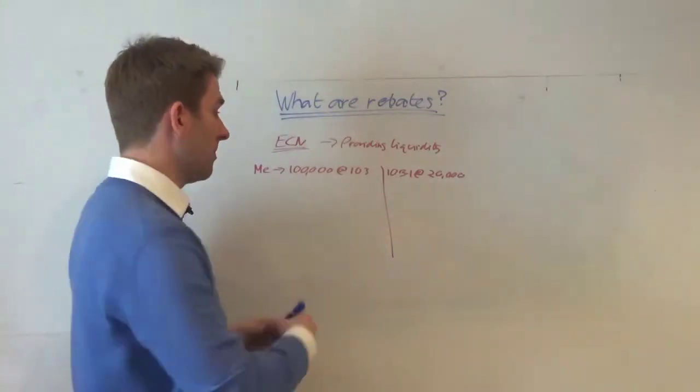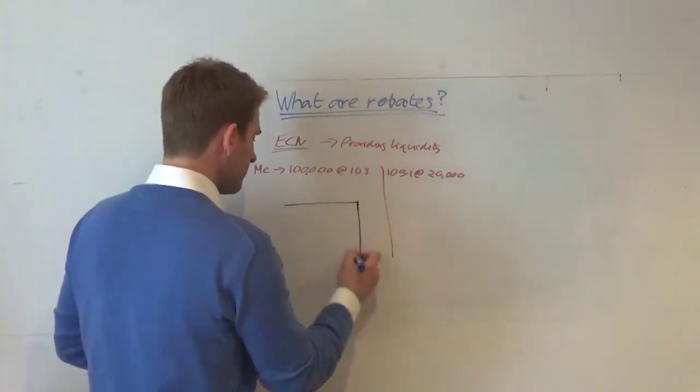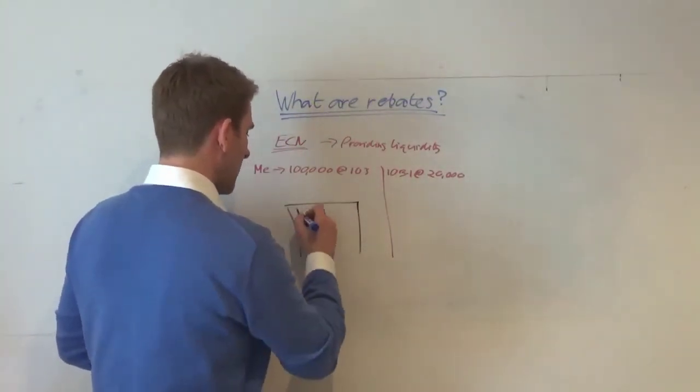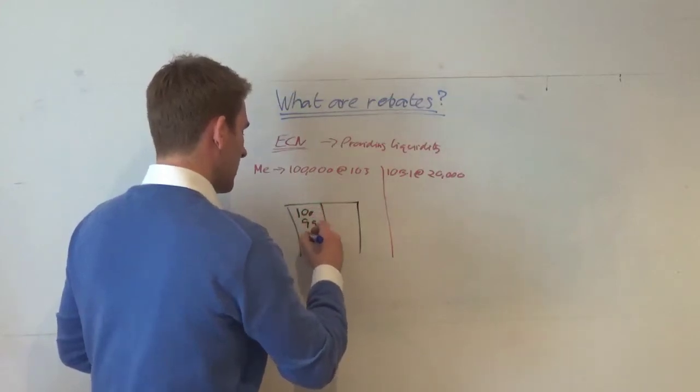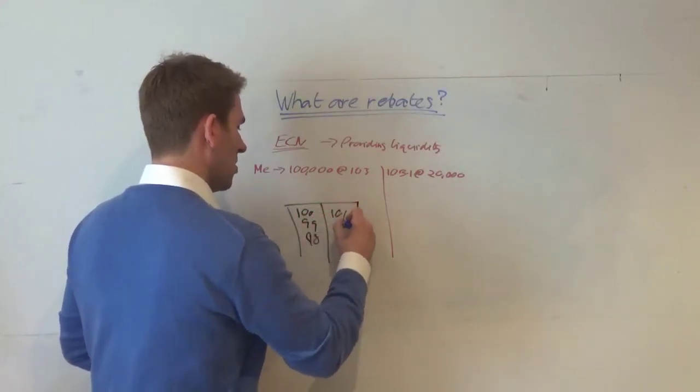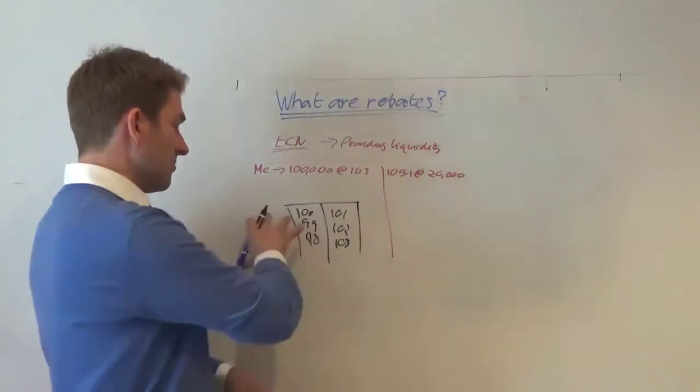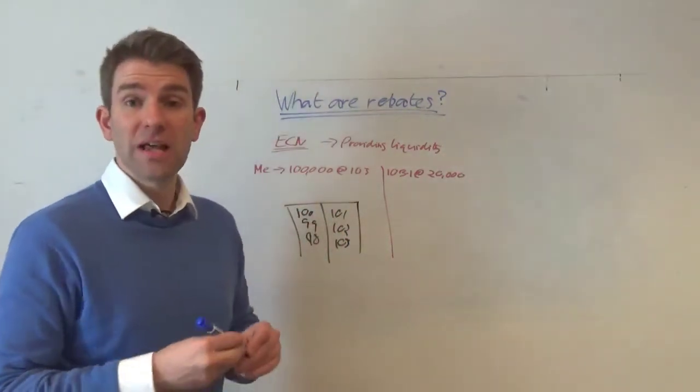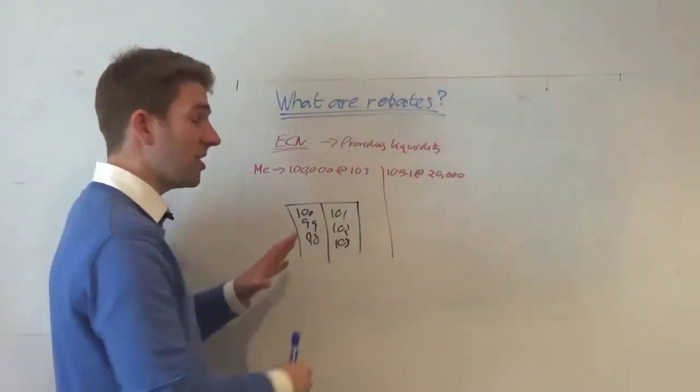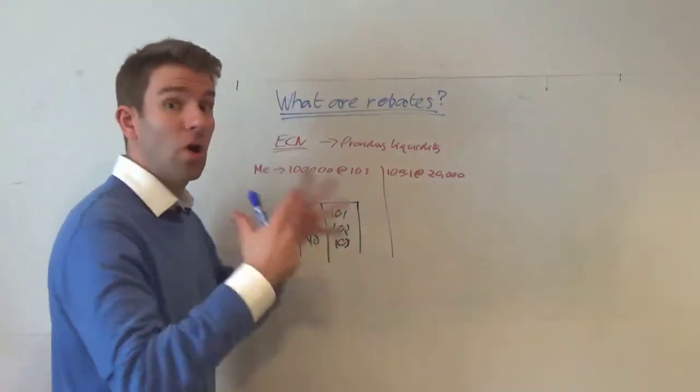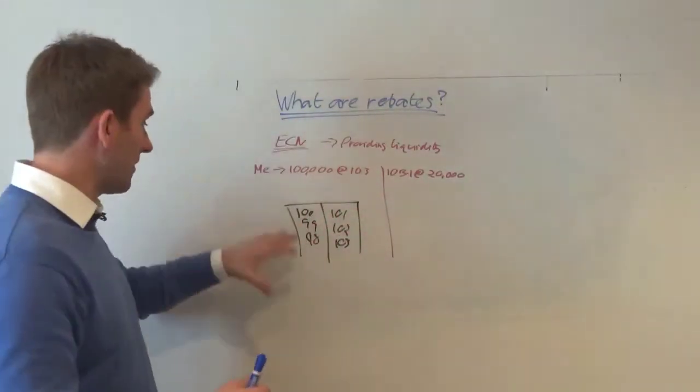The definition of that is if you've got a kind of market depth book here and you've got 100, 99, 98, 101, 102, 103, very crudely. And you'd have price and volume at each of those levels. That'll be your kind of market depth of the exchange. I've done a video on this that goes into a lot more depth to go and check it out if you haven't yet.